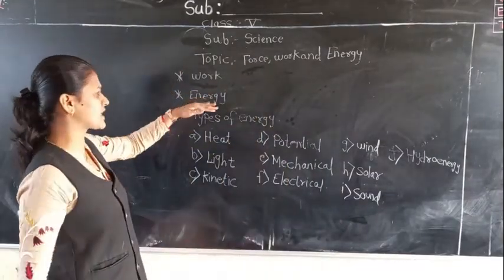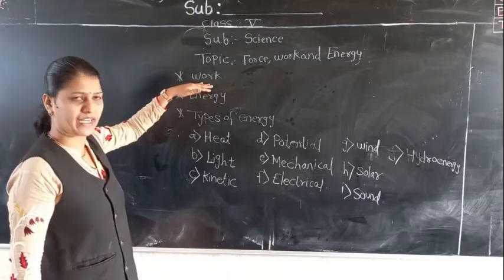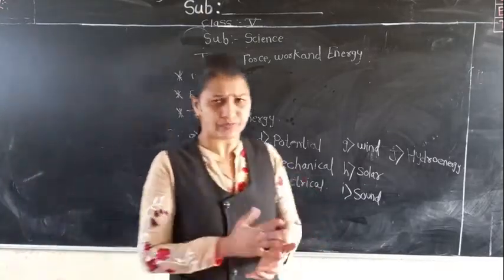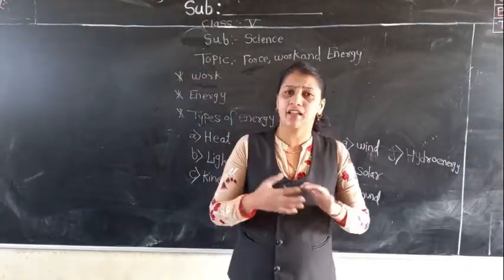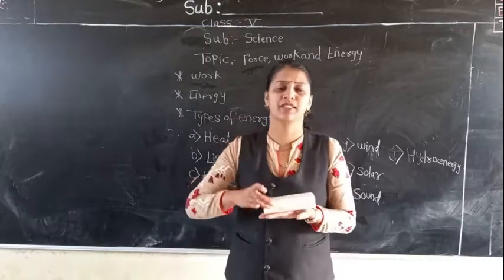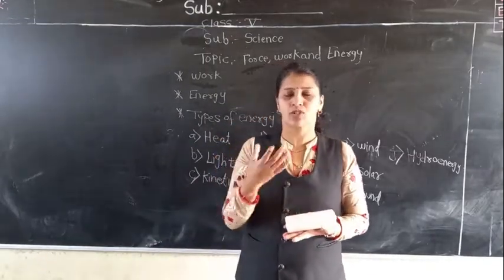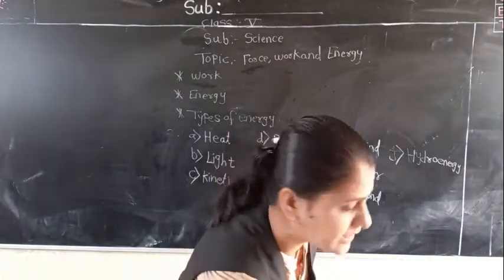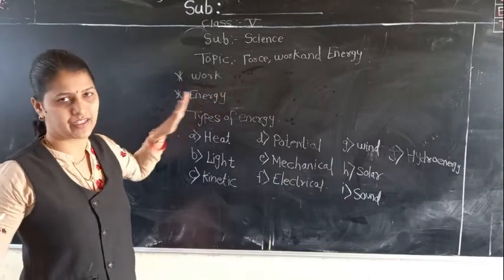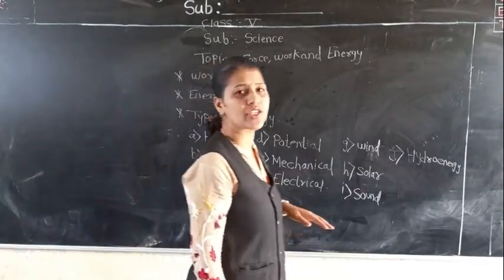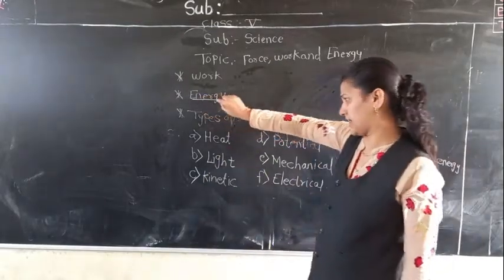Now the next concept is related to work. Energy is totally dependent on work. Whenever we are doing any kind of work, I need some energy. If I want to pick up this duster, I need some energy. So energy is nothing but the capacity to do work — that is called energy. What is meant by energy? The capacity to do work is called energy.